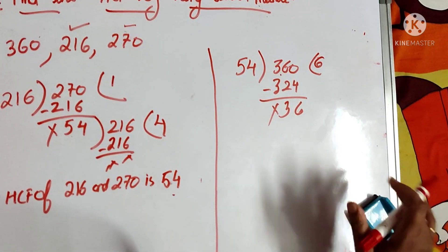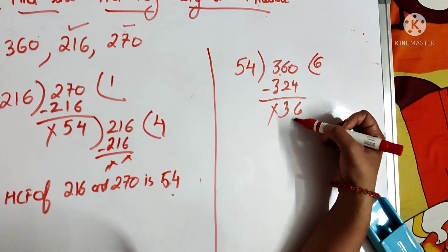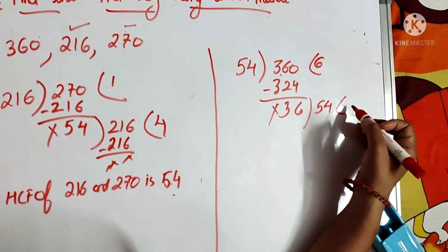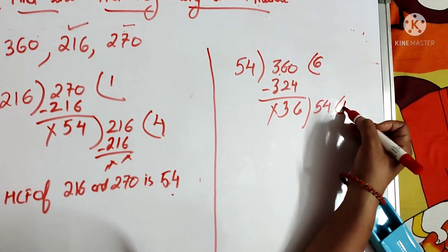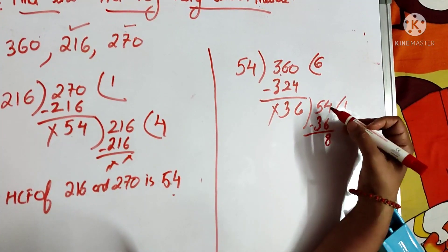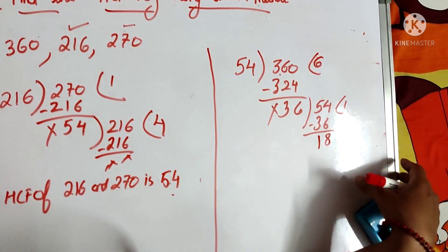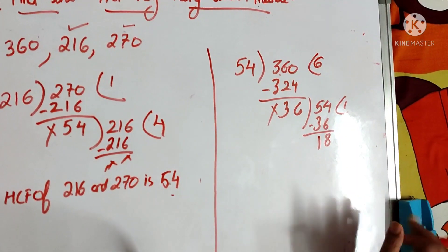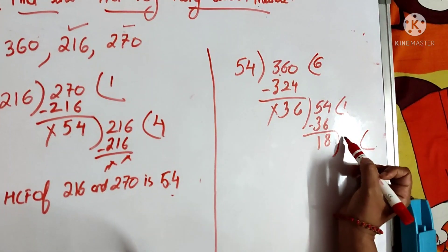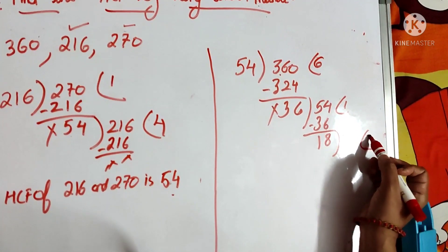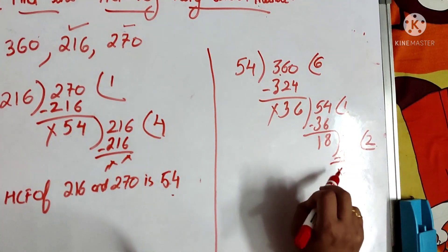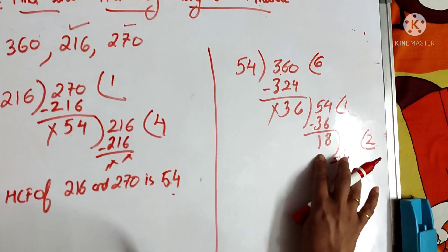Now 36 becomes the divisor and 54 becomes the dividend. 36 ones are 36, 36 twos are 72 — so it goes by 1 giving 36. The remainder is 54 minus 36 = 18. Then 18 becomes the divisor and 36 becomes the dividend. 18 ones are 18, 18 twos are 36 — it gets completely divided. We got HCF as 18.